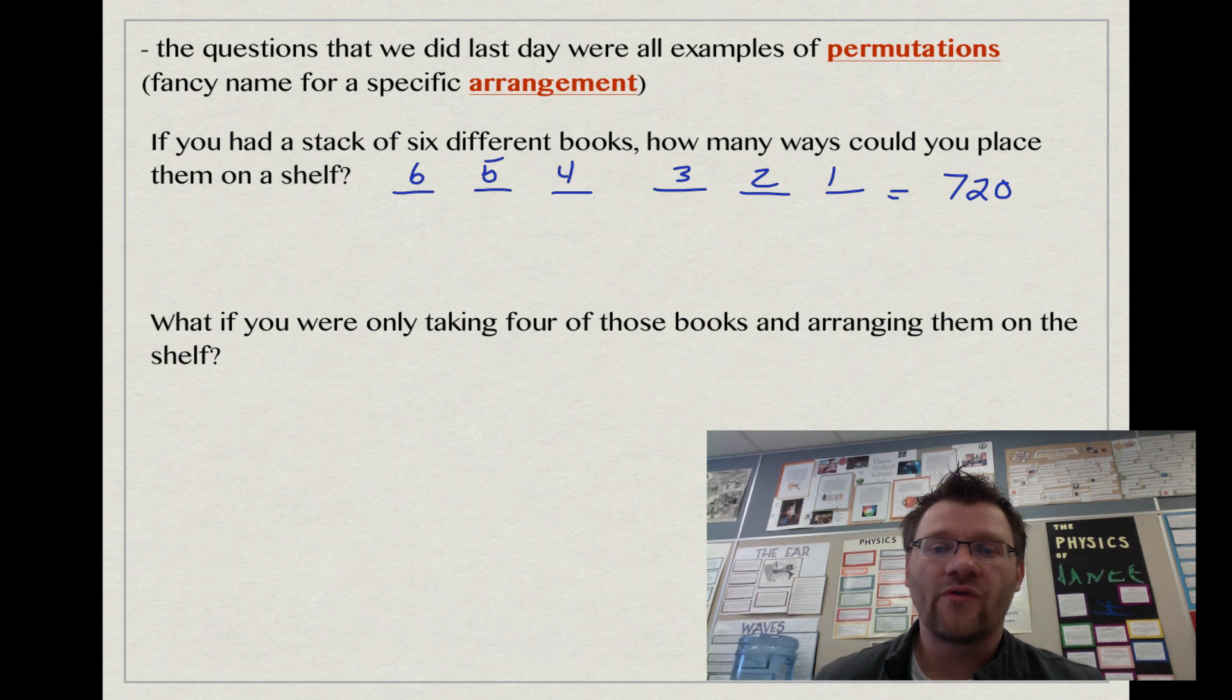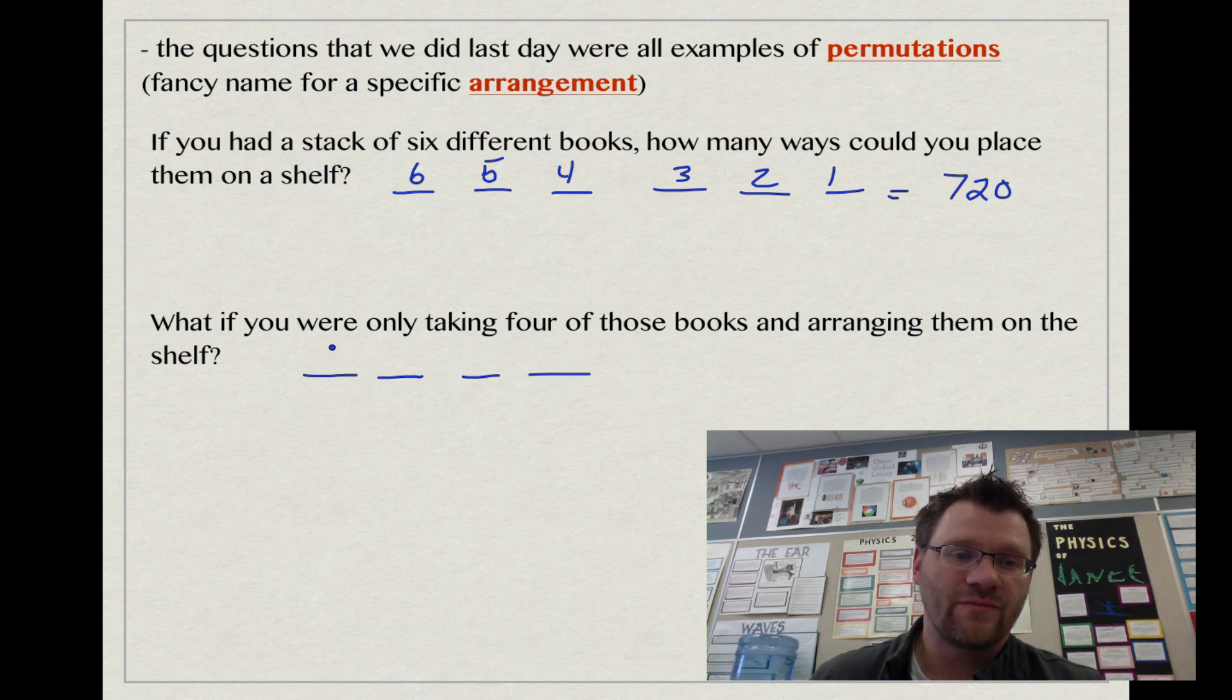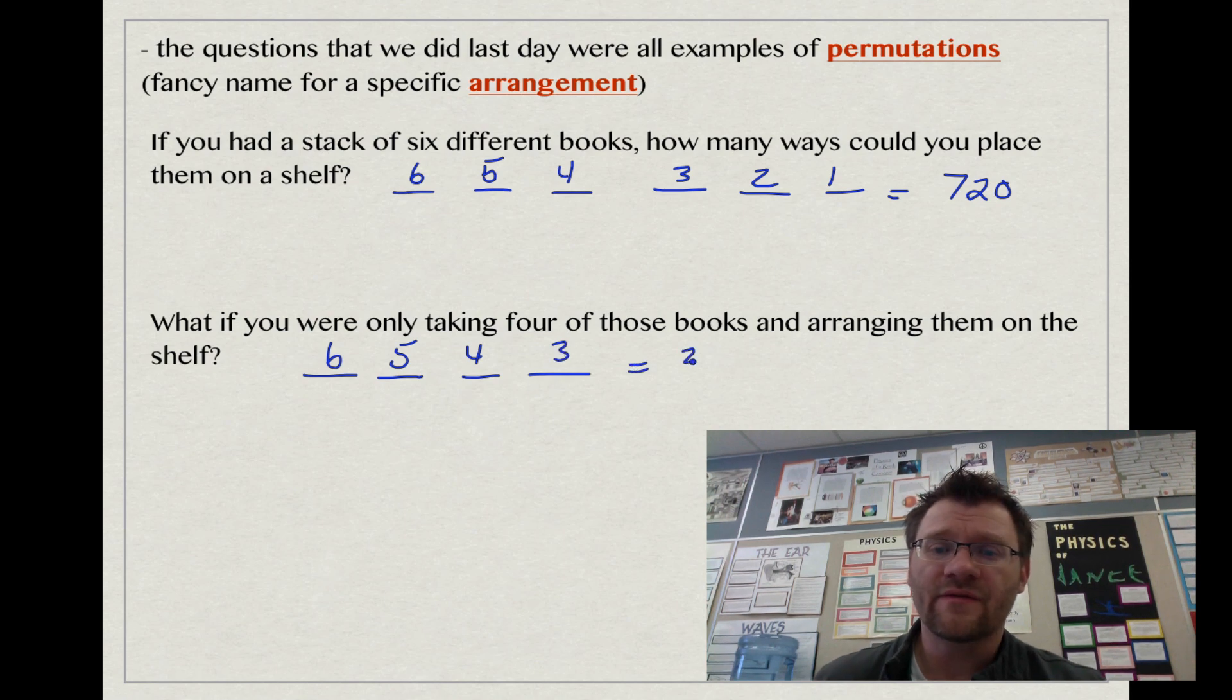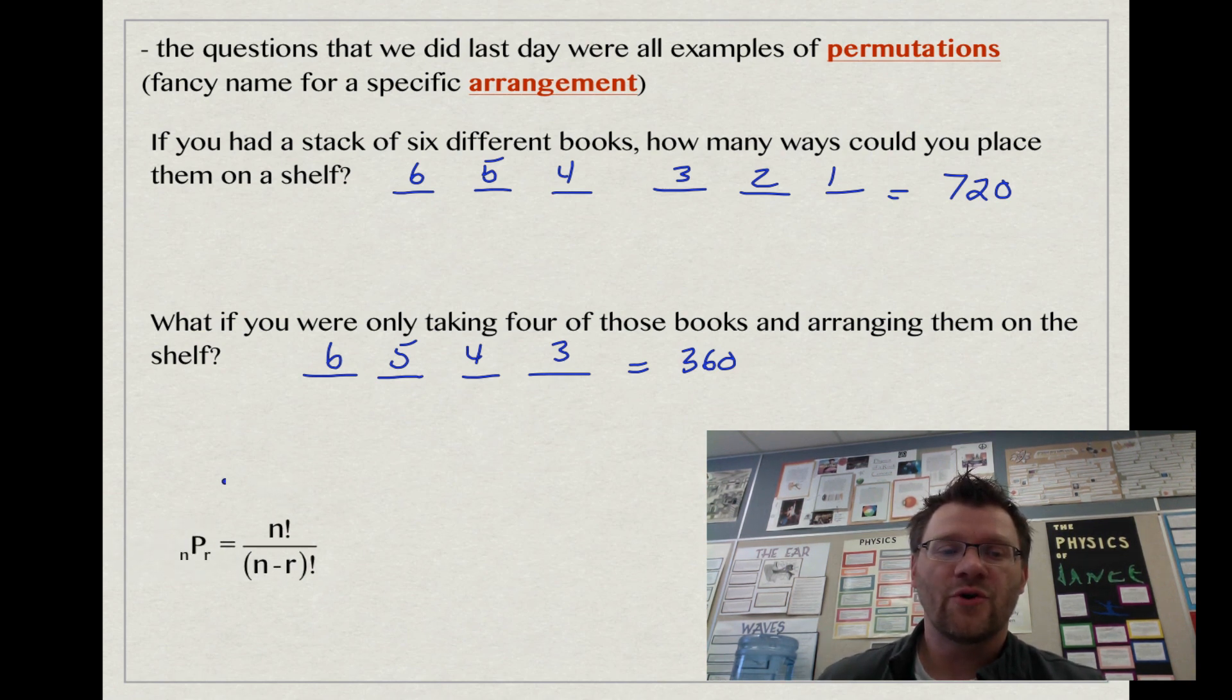What if you were only taking four of those books and arranging them on the shelf? Then we'd only have four blanks because we're only going to put four books in there. But the first book, we still have six different options, then five, four, and three. That gives us 360 different arrangements. So what we're doing is using something called permutation. The permutation button on your calculator looks like this: nPr, and that equals n factorial over n minus r factorial.